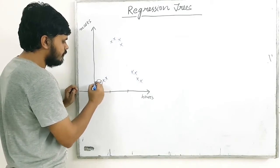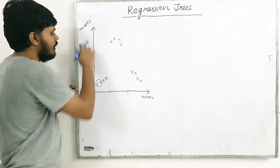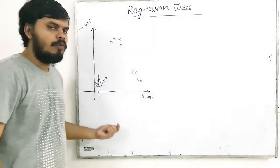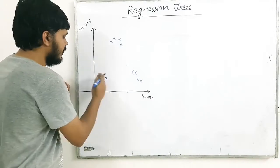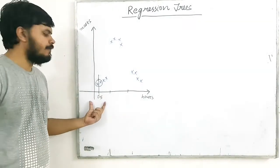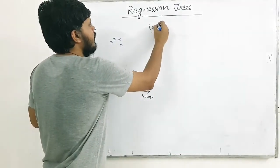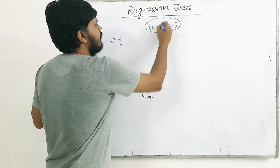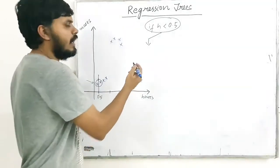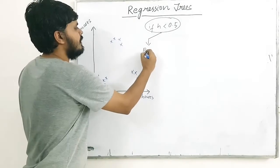You find the mean of those two points — I'm talking about hours, not marks. So this would be like a line at that mean. Let's say this number is 0.5. You create two groups on the basis of this number. If hours less than 0.5: on one side you'd have just the first point (p1), and its mean marks would be p1's marks itself.